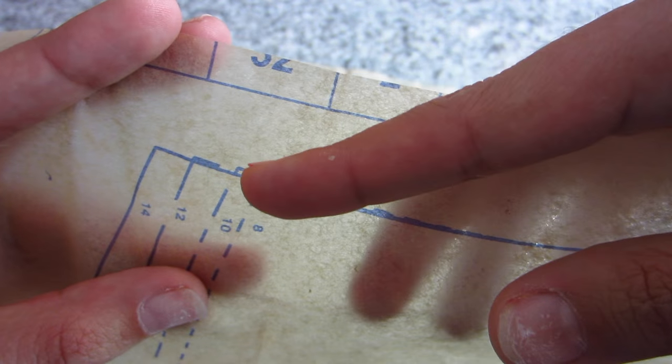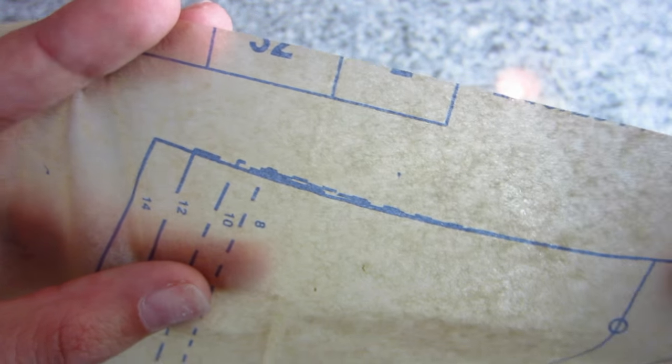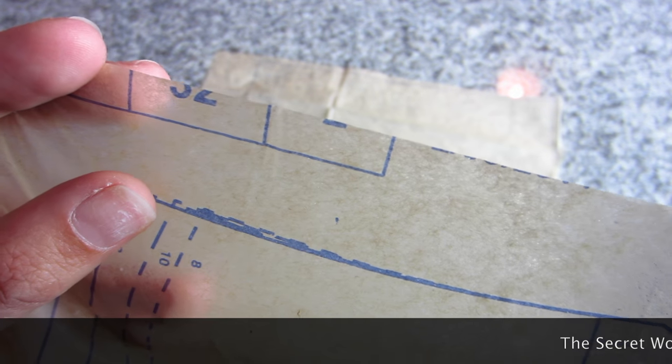So you just want to try and stay as close to your cut line as possible. You can see that size 10 goes up to this little point here, so you'll want to make sure that you cut that exactly.